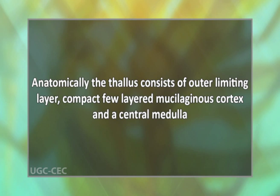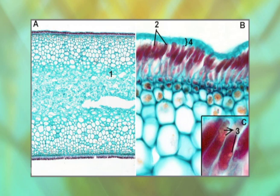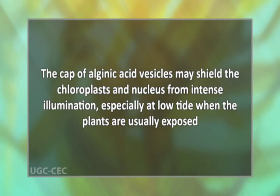Anatomically, the thallus consists of an outer limiting layer, compact cellular mucilaginous cortex, and a central medulla. The outer layer is composed of small cells containing abundant plastids and performs the function of assimilation. The medulla is the major part of the frond, composed of hypha-like elongated cells very similar to Laminaria, probably performing the function of conduction of food material. The intercellular spaces are filled with mucilage. There is an orientation of organelles within the epidermal cells, with an outer layer of alginic acid vesicles with a basal nucleus and chloroplasts. The cap of alginic acid vesicles may shield the chloroplasts and nucleus from intense illumination, especially at low tide when the plants are usually exposed.